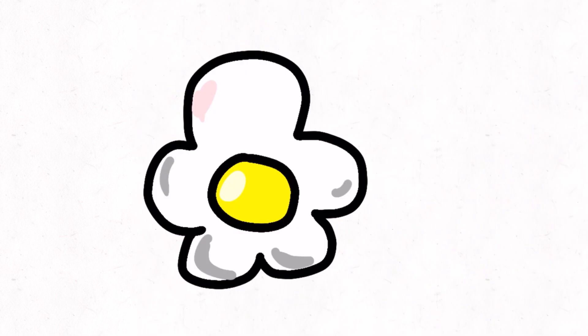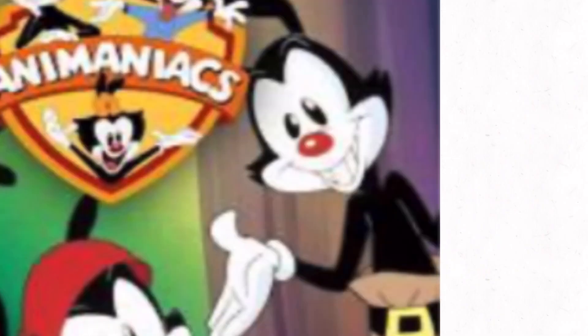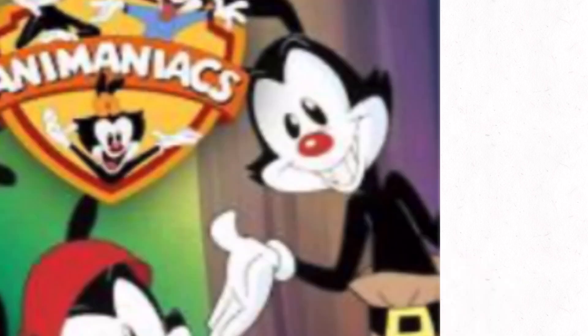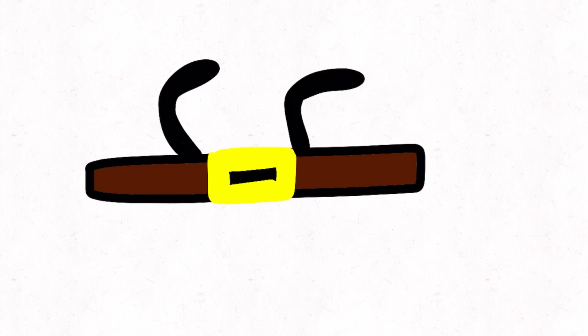Dot wears a flower, so we're going to make her that flower. And Yakko, I honestly have no clue with Yakko. He wears a belt, so we're going to make him a belt, add his ears, and boom.